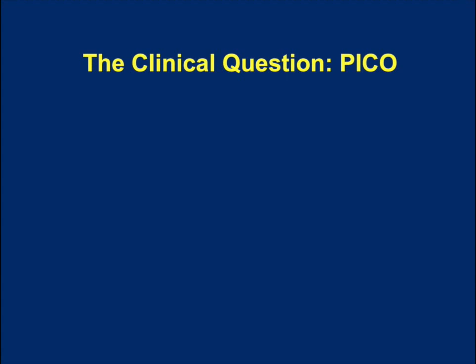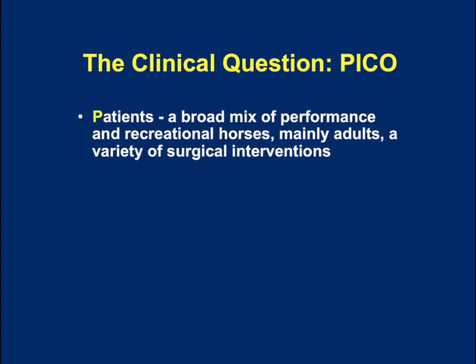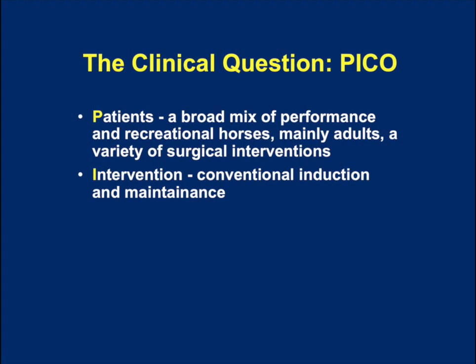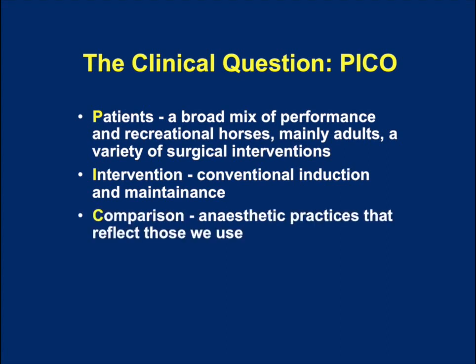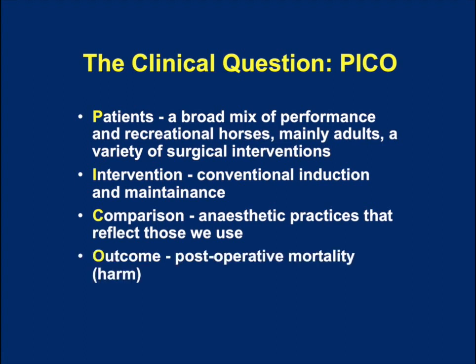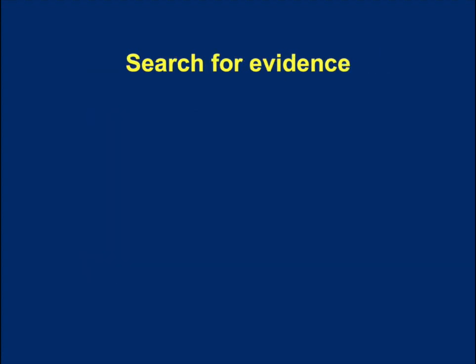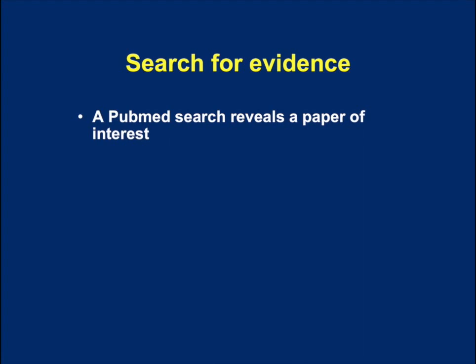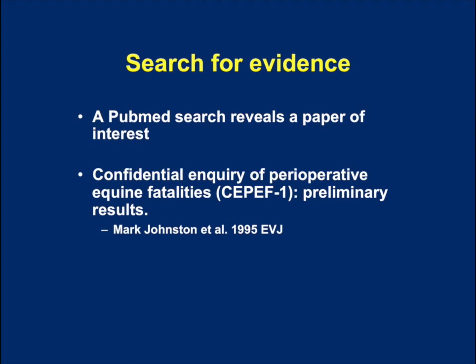To search for data, we'll ask ourselves the clinical question using the PICO acronym. The patients are going to be a broad mix of performance and recreational horses, mainly adults, with a variety of surgical interventions — we may choose to look at elective surgery alone, or elective and emergency surgery combined. The intervention is conventional induction and maintenance of anaesthesia. The comparison is anaesthetic practices that reflect those we use, and the outcome is peri-operative or post-operative mortality. When we search PubMed on equine anaesthetic and death, we come up with a paper by Mark Johnson from 1995.